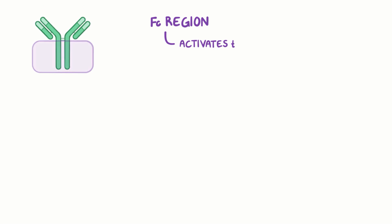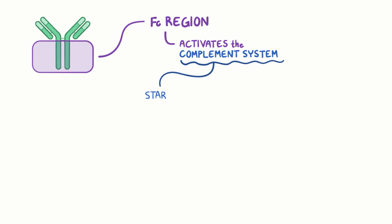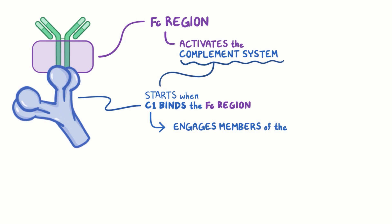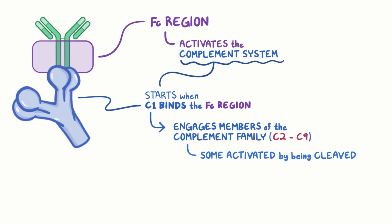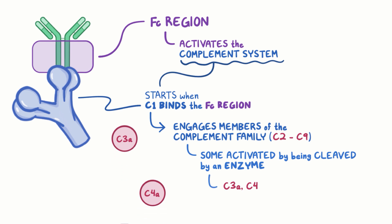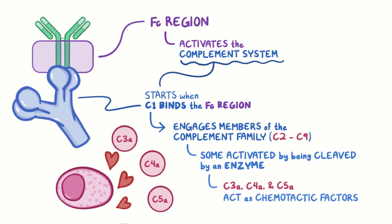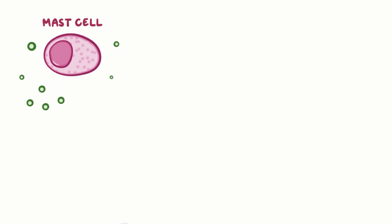The Fc region activates the complement system. The process gets started when C1, the first of the complement proteins, binds to the Fc region of the antibody. C1 then engages other members of the complement family, C2 through C9, some of which are activated by being cleaved or chopped by an enzyme. The cleaved fragments C3a, C4a, and C5a act as chemotactic factors, meaning they attract mast cells. The mast cells degranulate and release molecules like tumor necrosis factor alpha, leukotrienes, and cytokines.